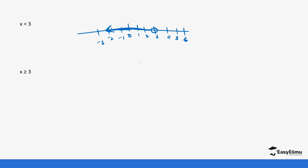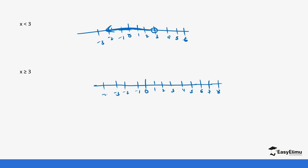Let's do x is greater than or equal to 3. This one is going to be a bit different. We want values greater than 3, so we draw an arrow showing values of x increasing. But is 3 part of x? In this statement it's greater than or equal to, so it tells us that 3 is one of the numbers of x — x can be 3 or any number above 3. That's why we fully shade the circle completely.